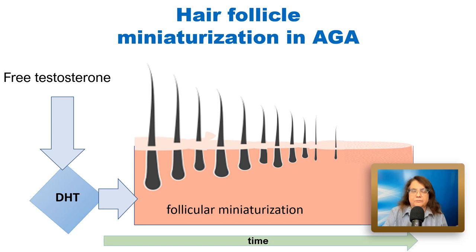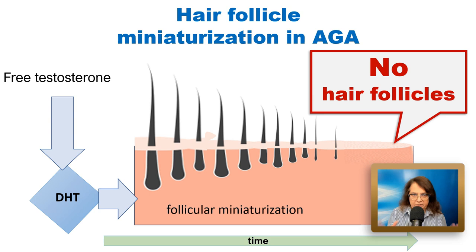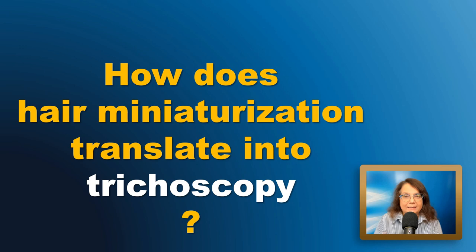But what usually nobody tells us is that this is not the end stage. The very late end stage is hair follicle dropout — there are no hair follicles anymore; they are replaced by fibrotic tissue. This is the moment when hair regrowth becomes impossible. Looking at this gentleman with long-lasting androgenetic alopecia, he would probably not be a candidate for pharmacotherapy.